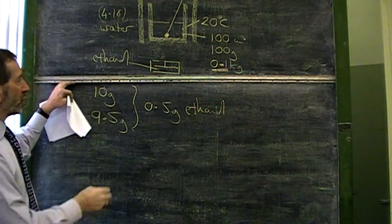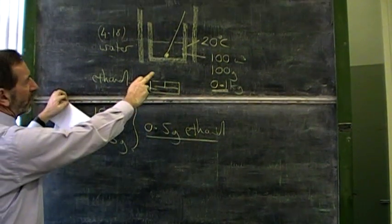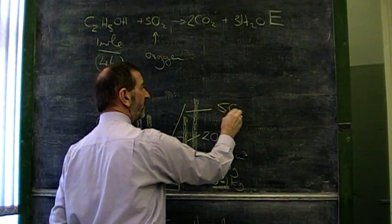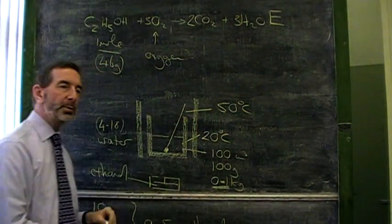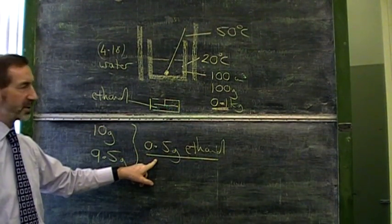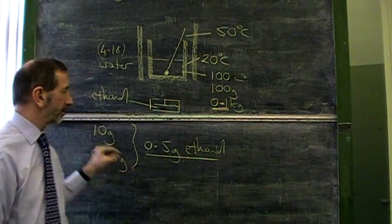Let's also assume that when this 0.5 grams of ethanol was burned, the temperature went up from an initial 20 degrees to a final temperature of 50 degrees. Is it possible to calculate how much heat was produced by the 0.5 grams of ethanol to raise the temperature of the water by 30 degrees?